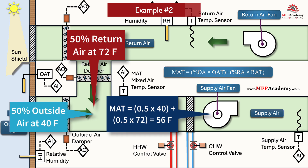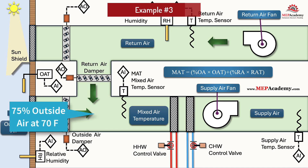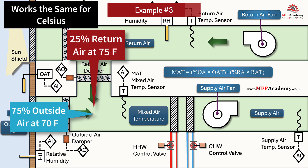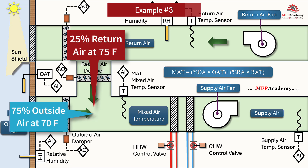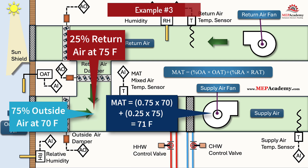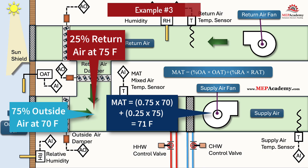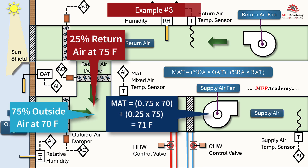Example 3 — 75% outside air, economizer mode: Outside air = 70°F, return air = 75°F, OA = 75%, RA = 25%. Mixed air temperature = (0.75 × 70) + (0.25 × 75) = 71°F. The coil sees 71°F entering air. This may or may not be a good setup depending on relative humidity — if the outside air carries a higher latent load than the return air, this could add significantly to energy consumption as the coil will need to remove excessive moisture in a wet coil situation.